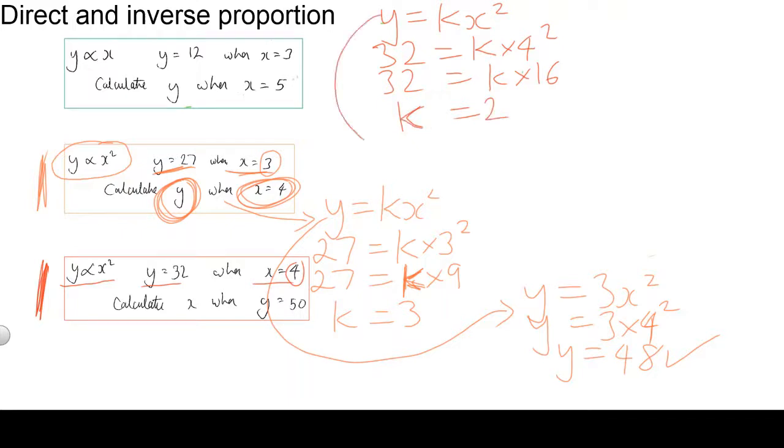So our formula is y is equal to, we know the value of k now, it's 2, x squared. So we can go ahead now and work out the value of x, given the value of y is equal to 50.